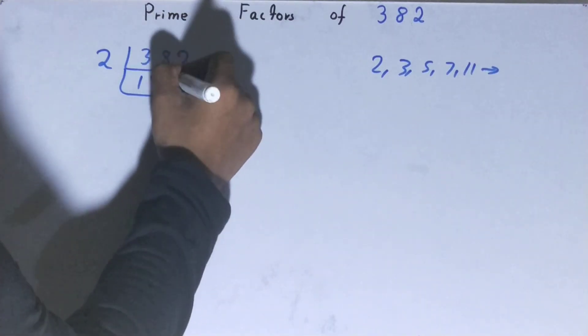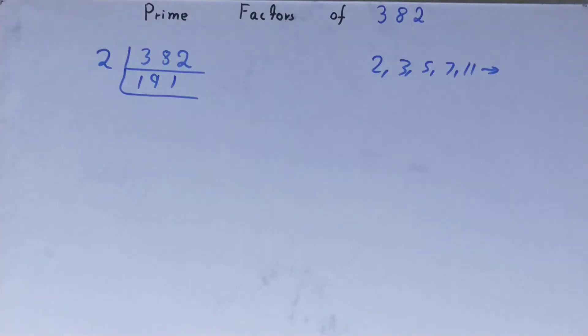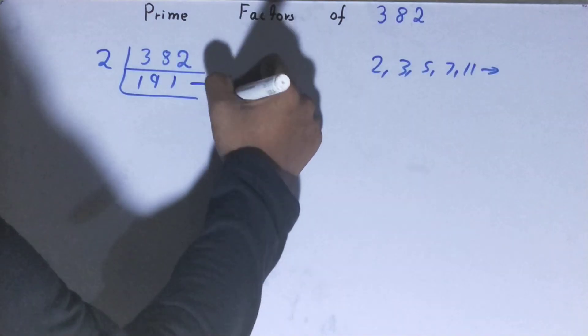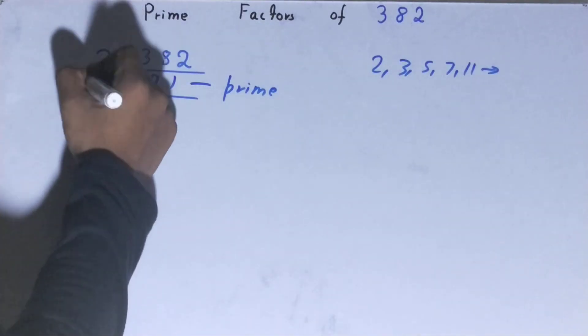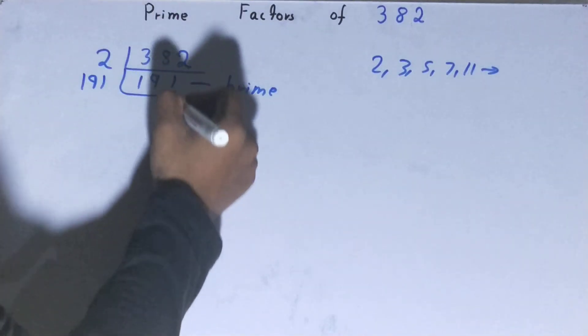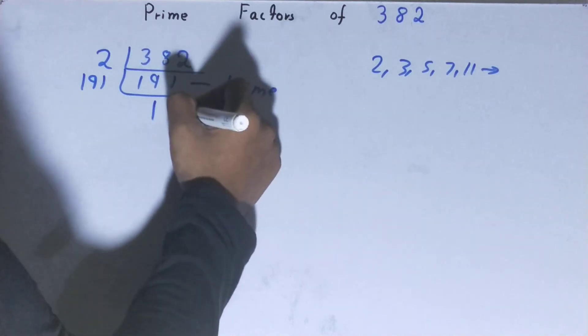You'll be left with 191. Is this 191 further divisible by 2? No, because it is an odd number, and it is also a prime number, so it is only divisible by itself. So to divide this 191, you need 191 on the left-hand side.